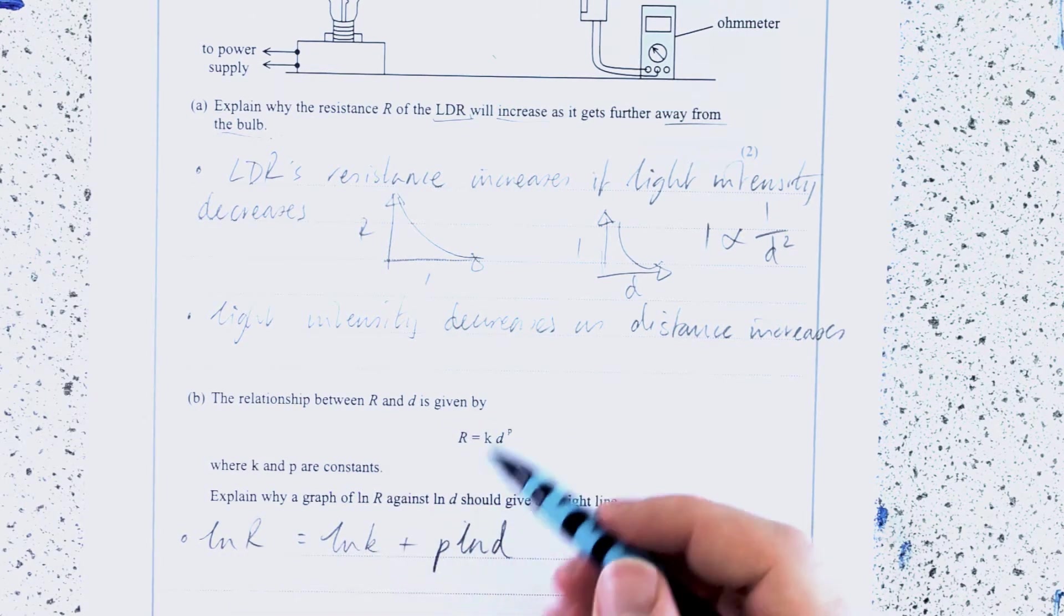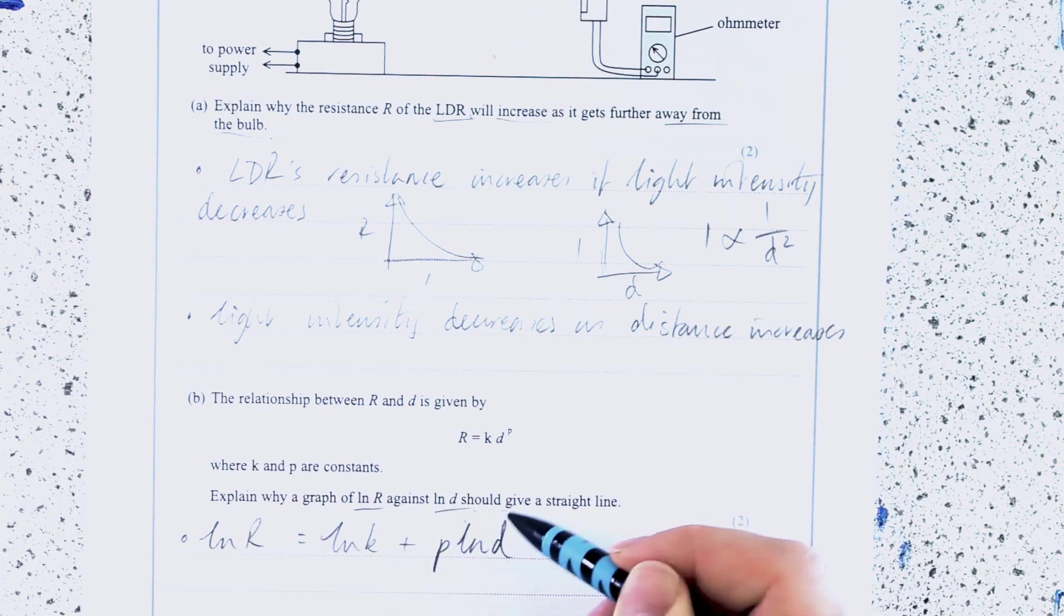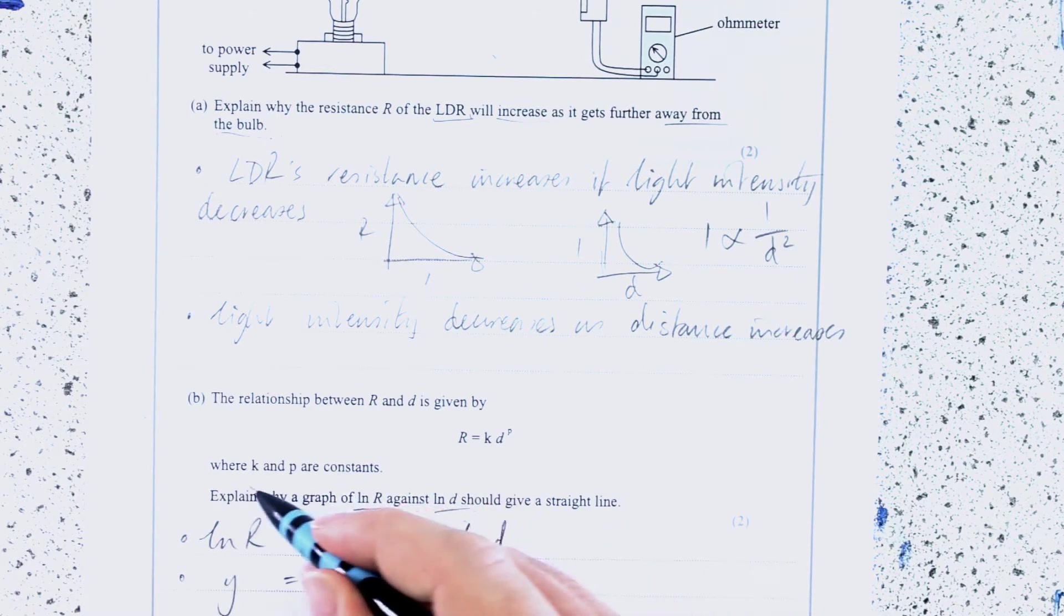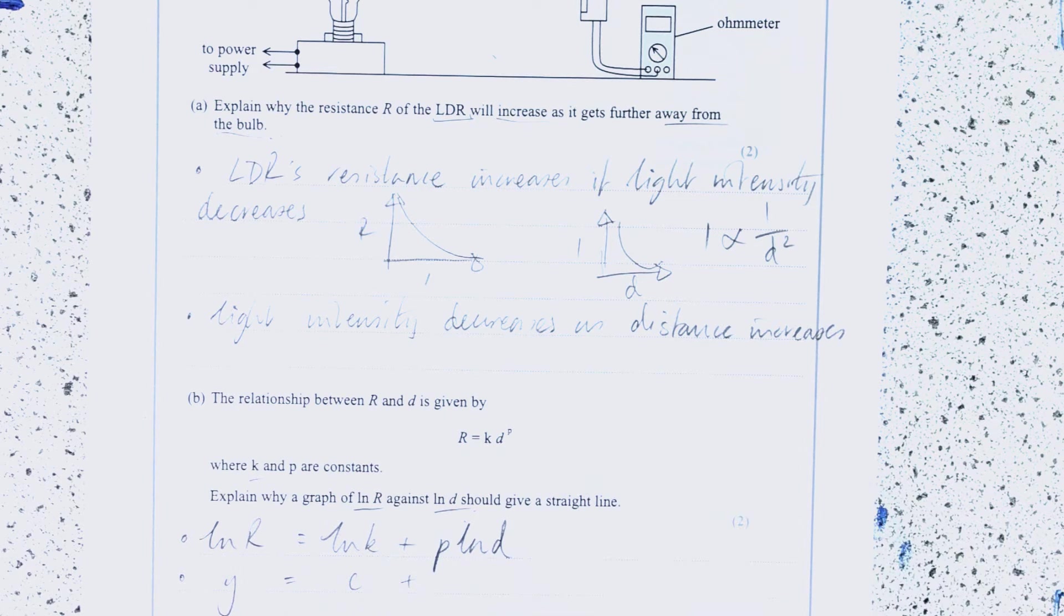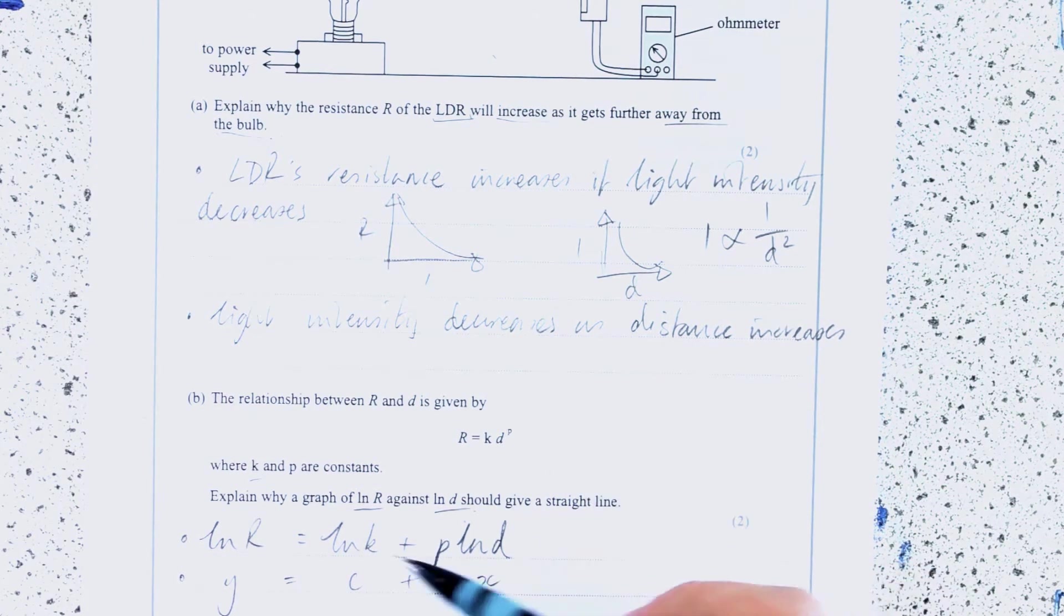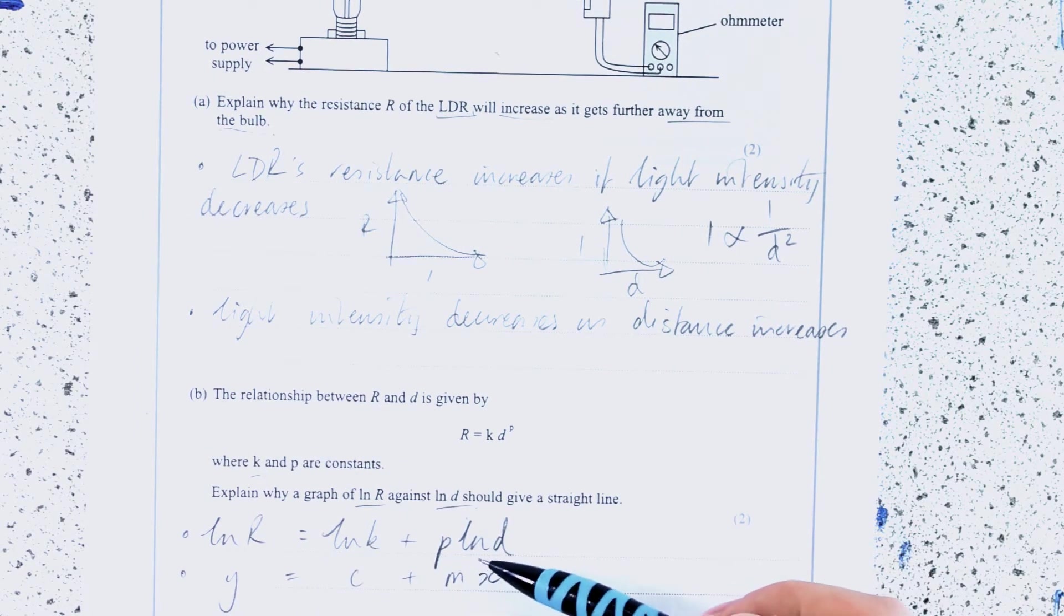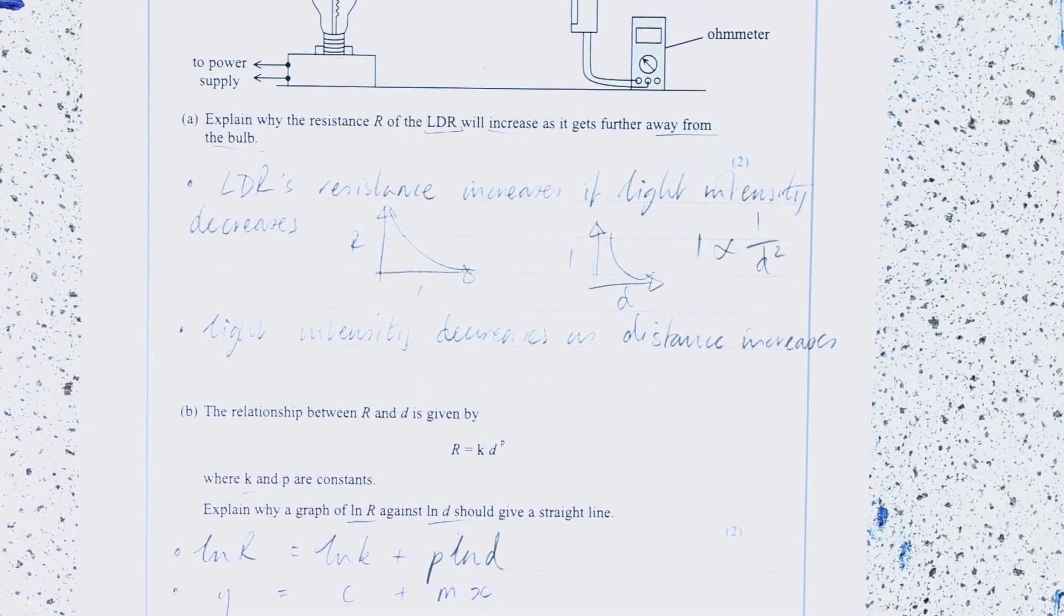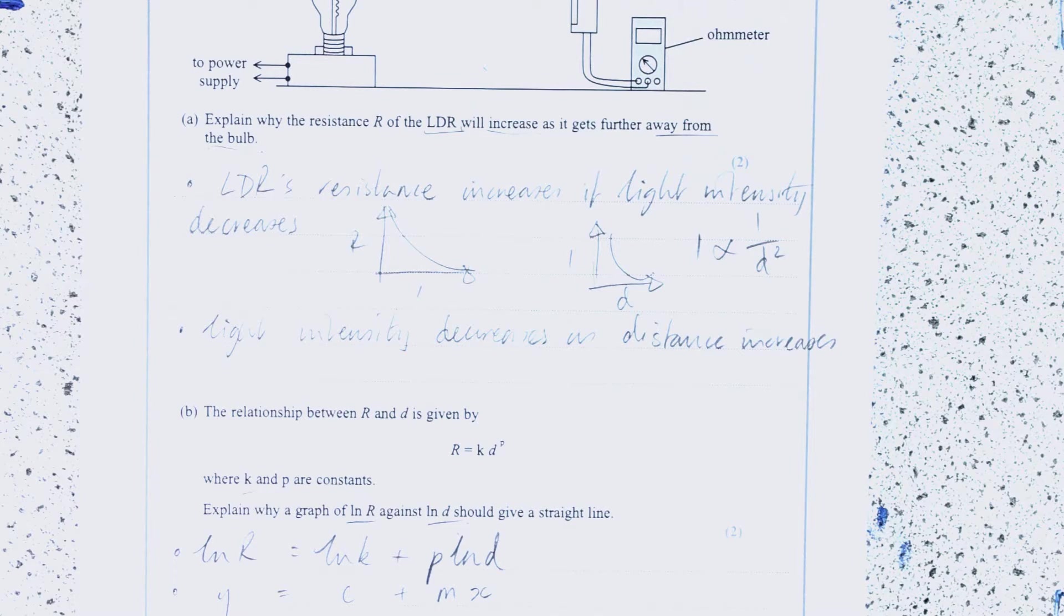Now, that is... They're asking me about Lunar against Lun-D. Well, this is the Y variable. This is a constant. I'm told K and P are constants. So that's my Y intercept. This is my X Lun-D. And this is my gradient P. So essentially, what I'm going to have here is I'm going to have a line where P is the gradient, Lun-D is the X variable and Lun-K is the Y intercept.